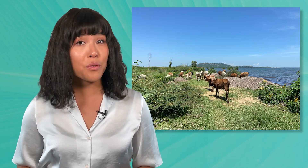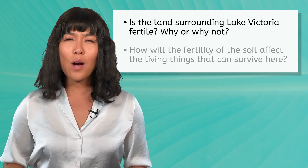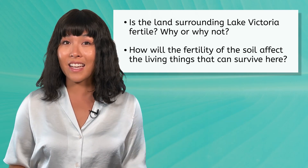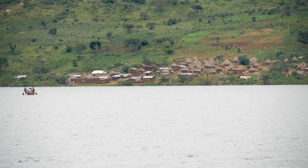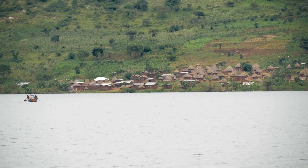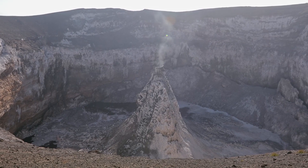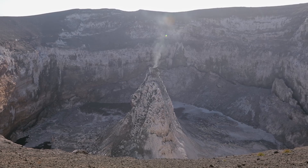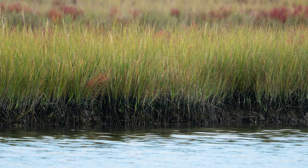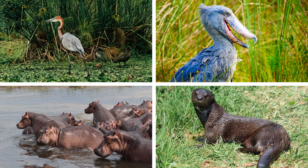Now that we've explored the atmosphere and hydrosphere, how could we describe the geosphere here around Lake Victoria? Remember that the ecosystem doesn't only include the lake itself, but the land surrounding it as well. Do you think this land is fertile? Why or why not? And how will the fertility of the soil affect the living things that can survive here? The soil around Lake Victoria is exceptionally fertile. The region benefits from volcanic activity that has enriched the soil with essential minerals and nutrients over time. Additionally, the lake itself contributes organic matter and sediments that further enhance soil fertility. Unlike some of the other ecosystems we've visited, it would seem that life has it pretty good here.